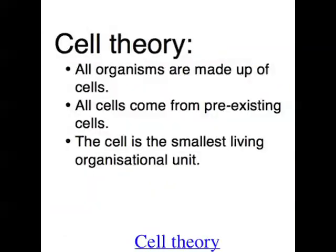That takes us on to another really important concept in biology: the cell theory. This theory says that all organisms are made up of cells, and cells are the basic building blocks of living things. All cells come from pre-existing cells — a cell can't just appear out of nothing; one cell divides to make a new cell. And the cell is the smallest living organisational unit. The human body is made up of trillions of cells, trees are made up of cells, and bacteria is made up of just one cell.